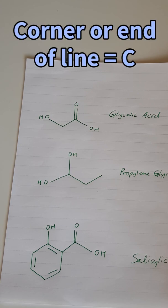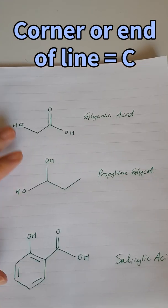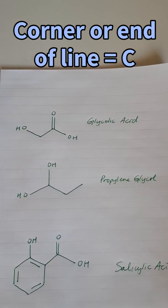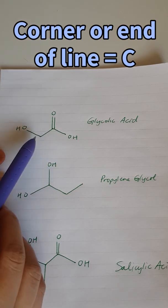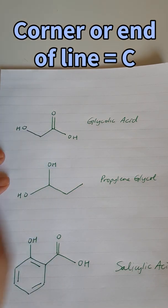Firstly, any corner or any end of a line that isn't labeled is a carbon atom. So for example on the first structure here — this is glycolic acid — we've actually got two carbon atoms on these two corners, this one and this one.